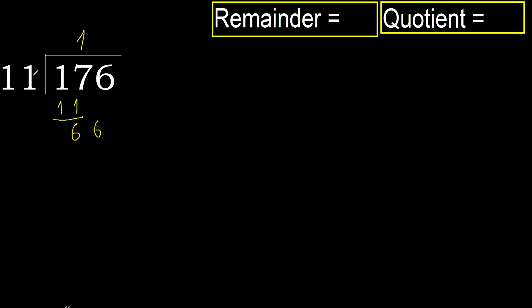66. 11 multiplied by 6 is 66, is not greater, ok. Subtract: 66 minus 66 is 0. Next — there is no number, therefore finish.